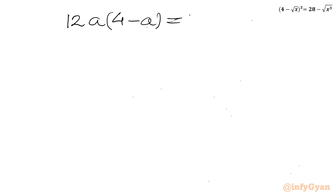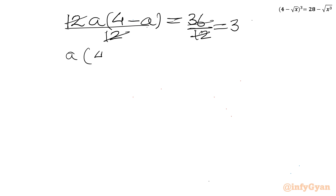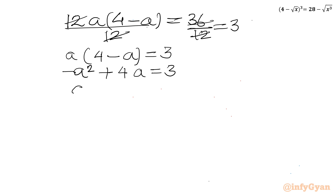Dividing both sides by 12 gives a(4 - a) = 3. Expanding: -a² + 4a = 3. Taking all terms to one side: a² - 4a + 3 = 0.